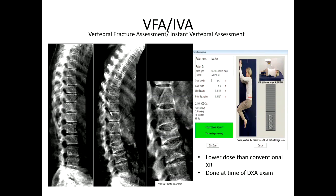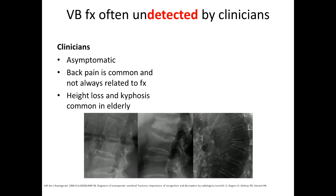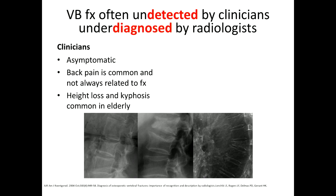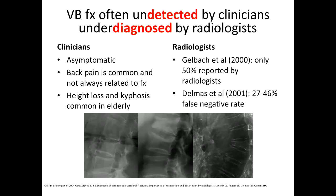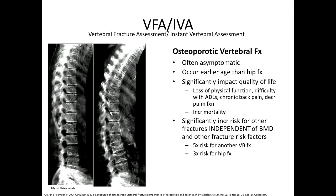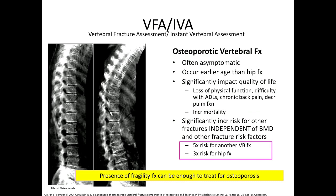Vertebral fracture assessment (VFA) is a method by which potentially clinically silent osteoporotic fractures can be detected at the same time as the DEXA exam, with a much lower dose than conventional radiographs. Vertebral body fractures are often undetected because they are asymptomatic, back pain is common and not always related to fracture, and height loss and kyphosis are common in the elderly. Studies have shown that only 50% of vertebral body osteoporotic fractures were reported by radiologists. Importantly, vertebral body fractures are an independent risk factor for other fractures, and their presence can be enough to indicate treatment.